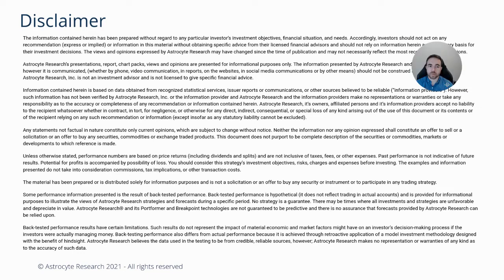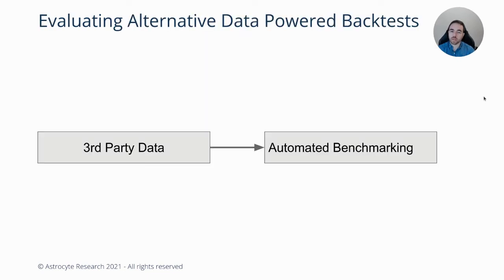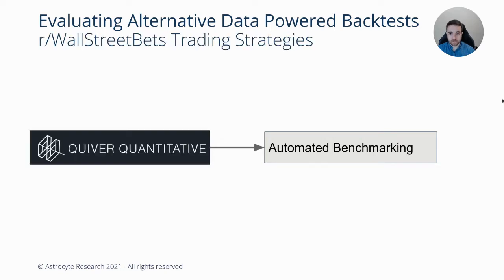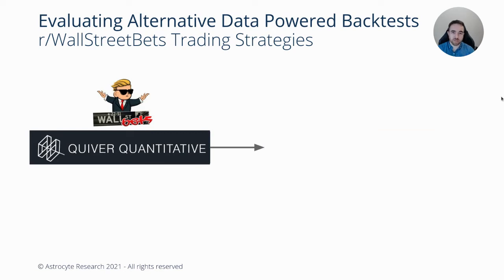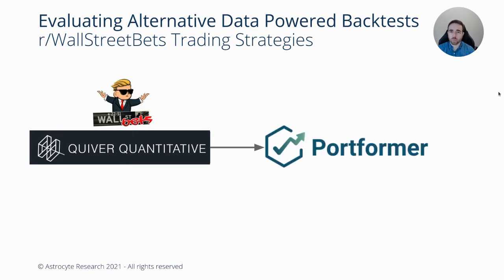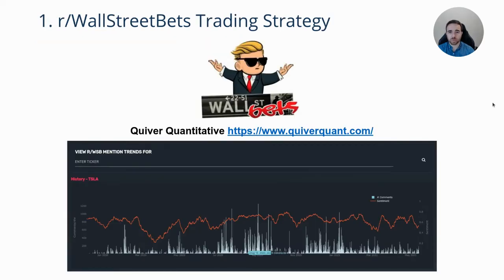All right, let's get into it. So what we're focusing on now is third-party data, in particular the Quiver Wall Street Bets data set. We're going to analyze this performance, and we're also going to benchmark it to understand what type of strategy this is. We're going to use our tool called Portformer, which essentially tries to score and replicate, using portfolios of ETFs, the strategy. We'll show you a little bit more of that.